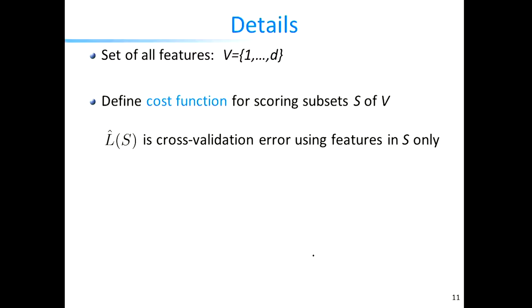Let's be a bit more formal. Let V denote all D variables, 1 through D. We define a cost function that takes as input a subset of these features and returns a score — how good or bad that feature set is. Then we search over sets of features in some systematic way to find one that works well.